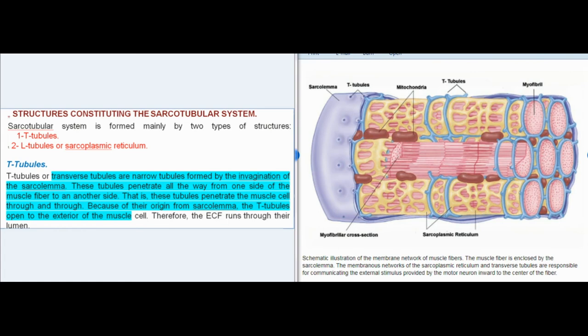T-tubules: T-tubules or transverse tubules are narrow tubules formed by the invagination of the sarcolemma. These tubules penetrate all the way from one side of the muscle fiber to another side. That is, these tubules penetrate the muscle cell through and through. Because of their origin from sarcolemma, the T-tubules open to the exterior of the muscle cell. Therefore, the extracellular fluid runs through their lumen.